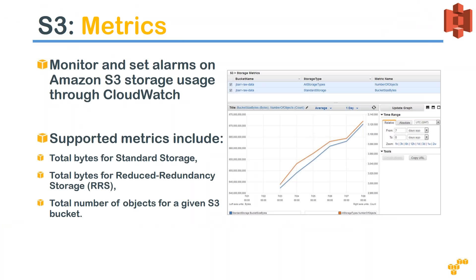Metrics allow you to monitor how many requests are happening, how much data is being stored or retrieved, and GB transfer amounts at any point in time. You can configure CloudWatch to trigger alarms when there is an unusual spike in S3 usage — helping you investigate whether it is a legitimate business case or unauthorized activity such as copying confidential data. There are three metric types available: storage type, number of requests, and number of objects.